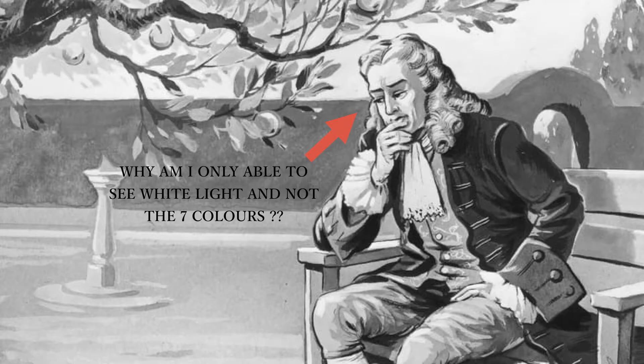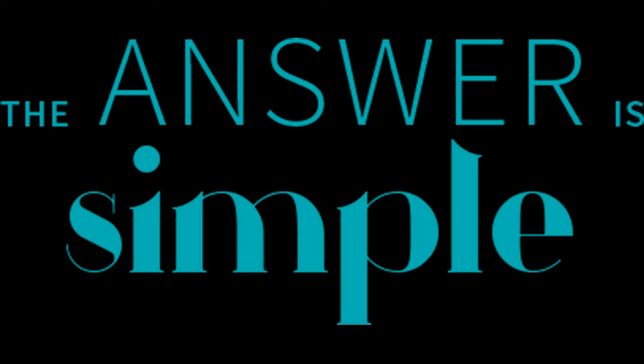But another question popped up that where we are able to see only white light instead of the seven colors. The answer to that can be explained pretty easily.